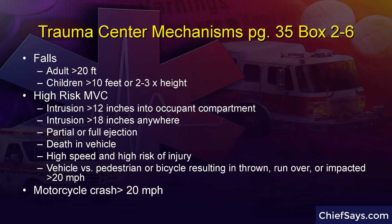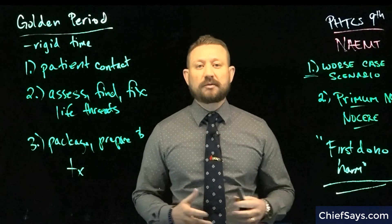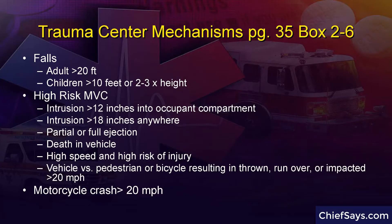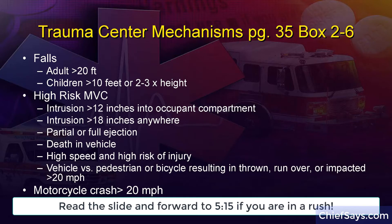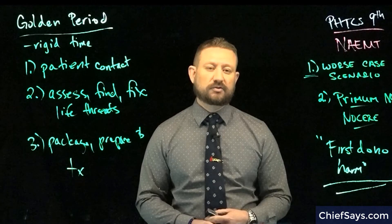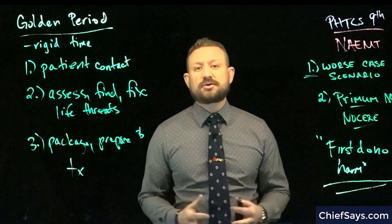Mechanisms requiring trauma center transport include: major falls — adults falling greater than 20 feet (one story is roughly 10 feet), or children falling greater than 10 feet or more than two to three times their height; high-risk motor vehicle collisions with intrusion greater than 12 inches into the occupant compartment or greater than 18 inches anywhere in the vehicle, including through the roof; partial or full ejections; a death in the vehicle; high-speed or high-risk injuries; vehicle versus pedestrian or bicycle with the patient thrown, run over, or impact greater than 20 mph; and motorcycle crashes greater than 20 mph.